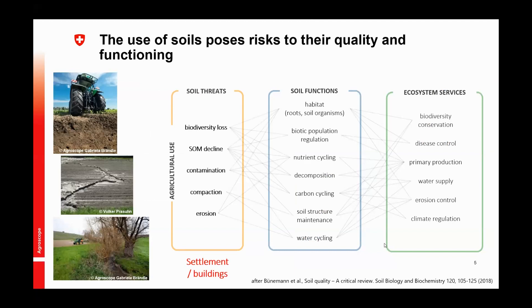We have many threats to soil related to agricultural use: biodiversity loss, soil organic matter decline, contamination, compaction, and erosion. One of the biggest threats outside of agricultural context is settlement and buildings that cover soil permanently. In Switzerland, about eight soccer fields per day are covered with buildings — and unfortunately, it is mostly the very good agricultural soil around cities that is lost to settlement.